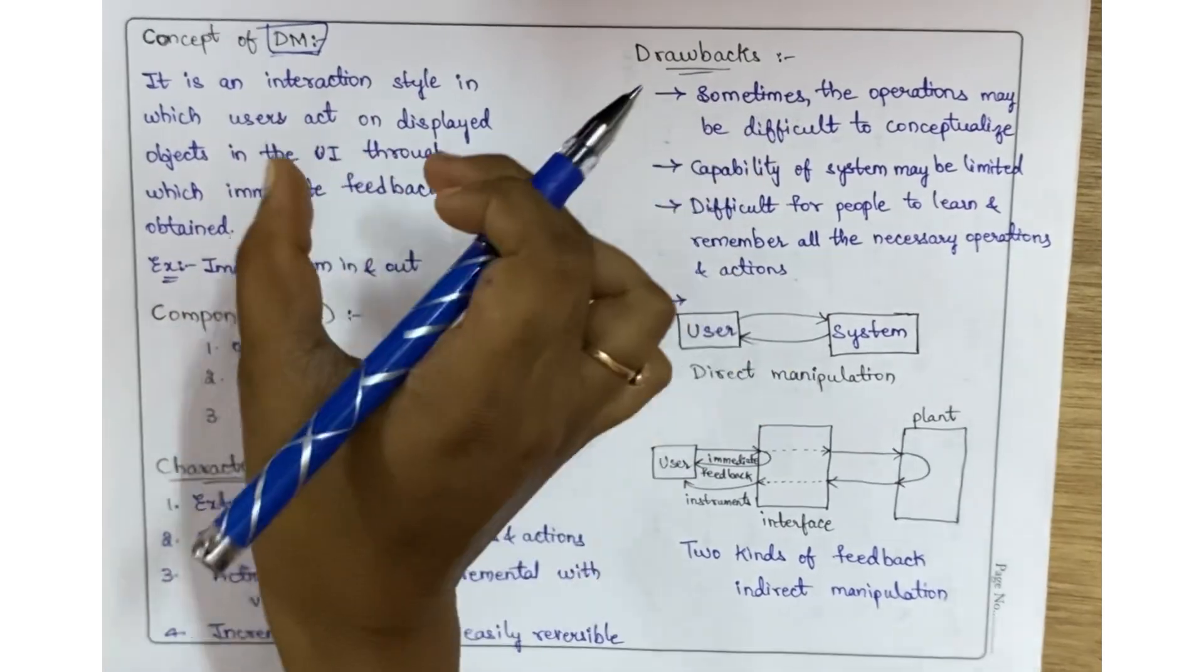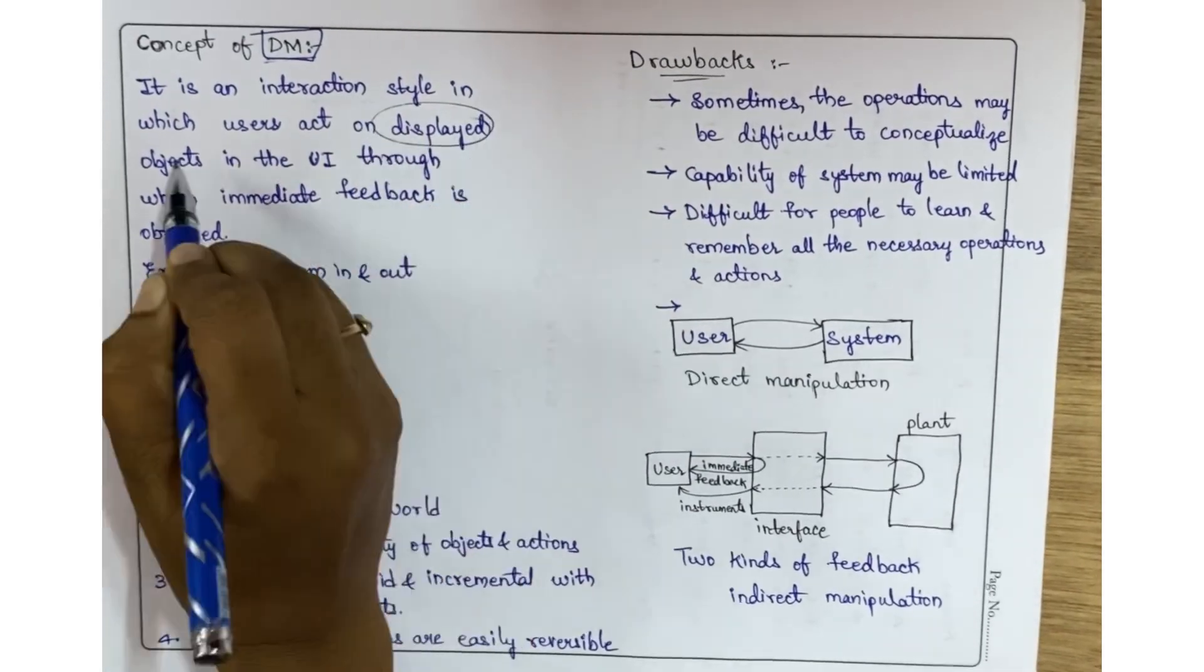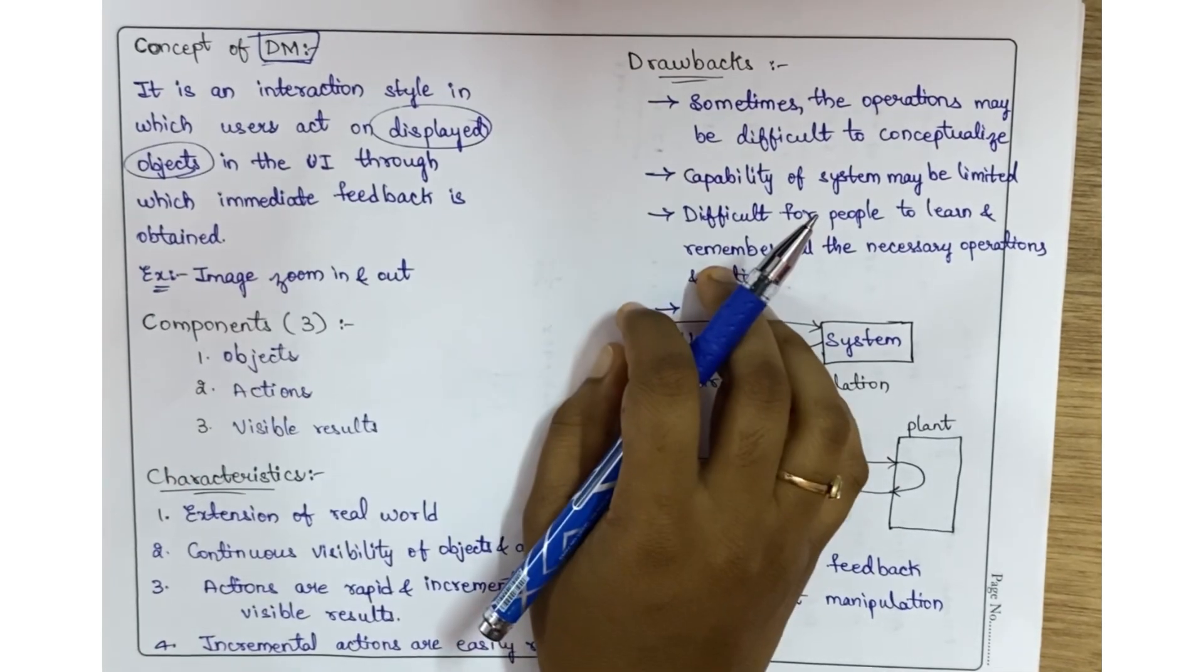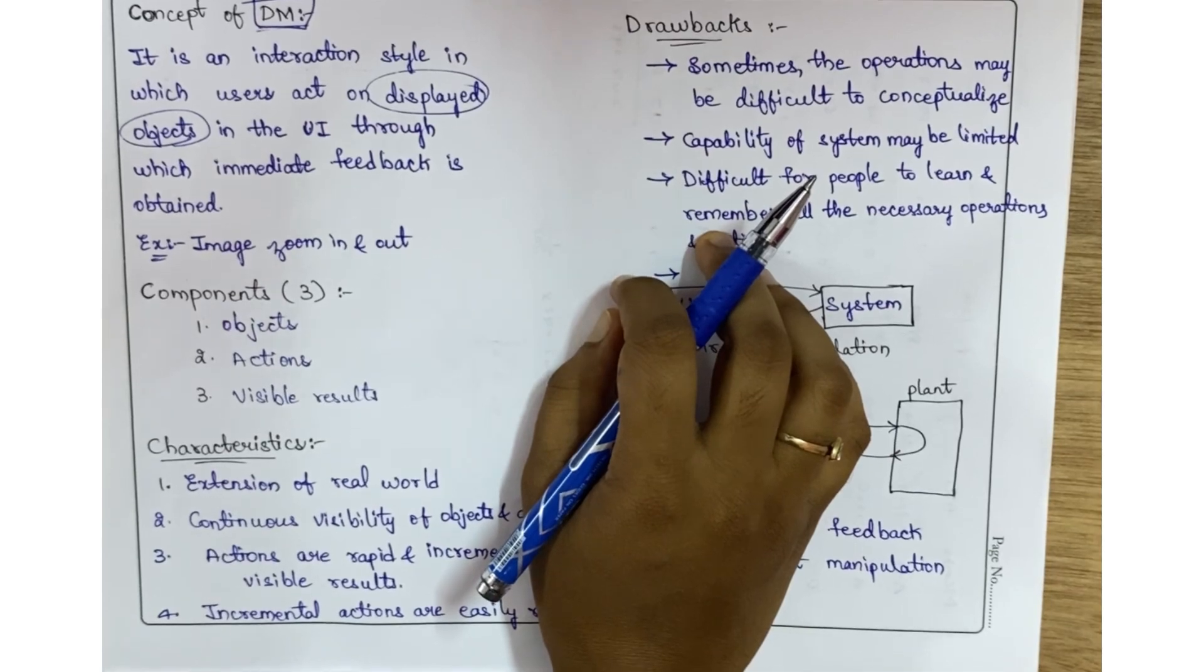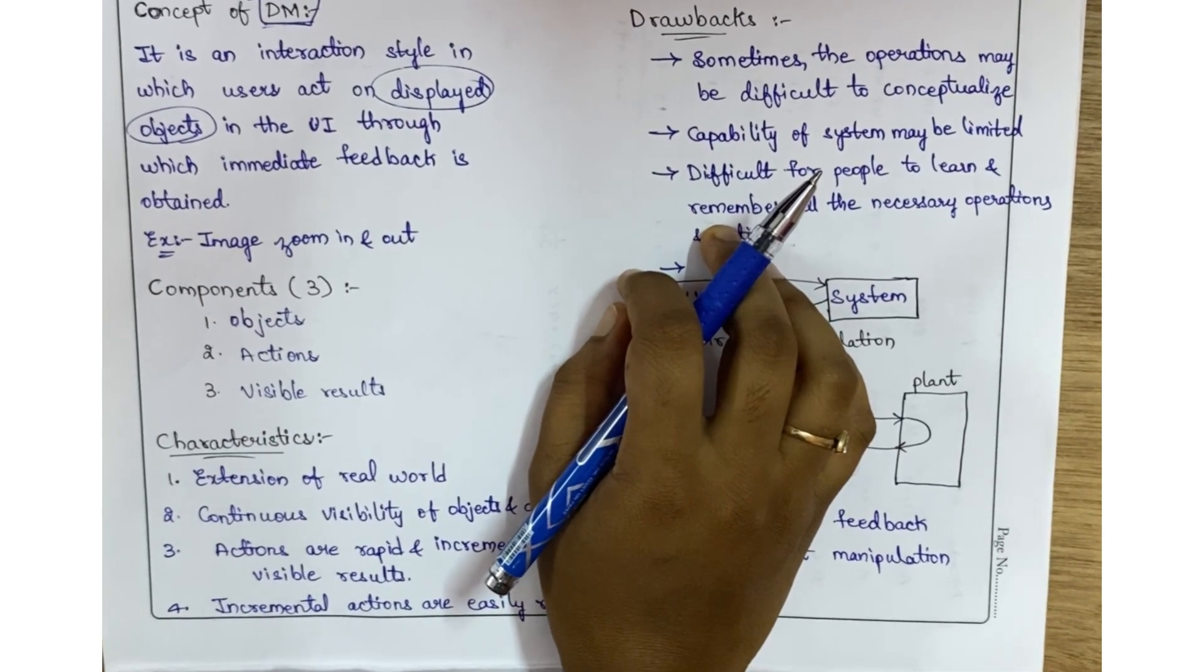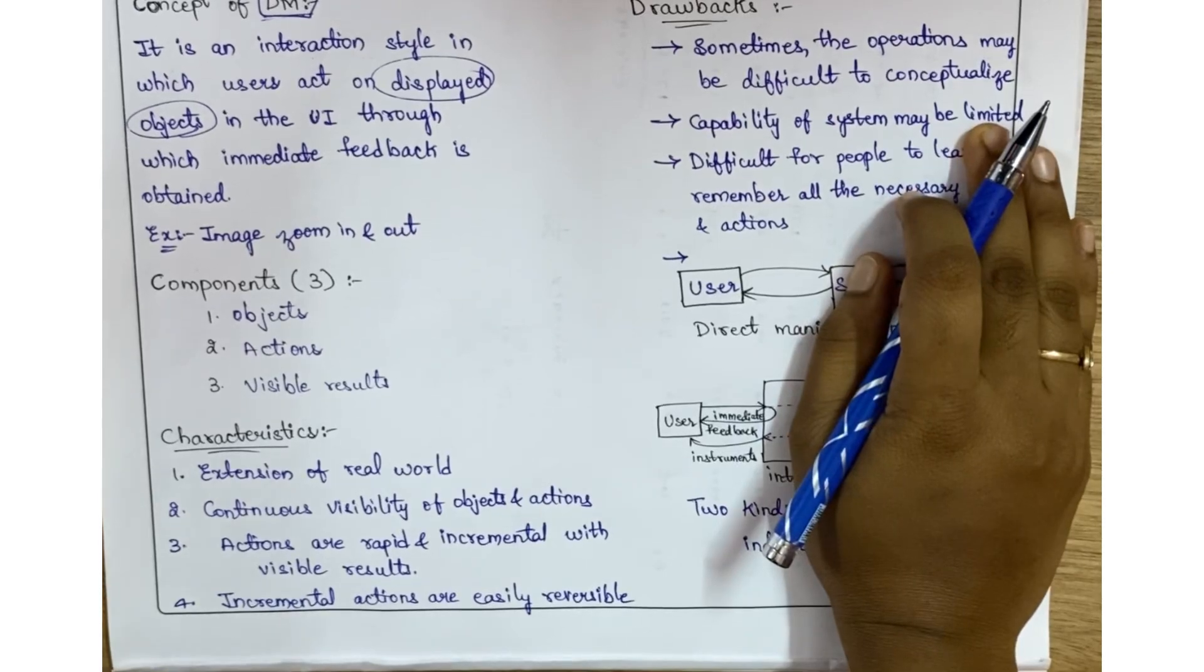Direct manipulation is one of the interaction styles in which users act on the displayed objects. That means whatever objects are displayed on the screen, they interact with those things and get immediate feedback.